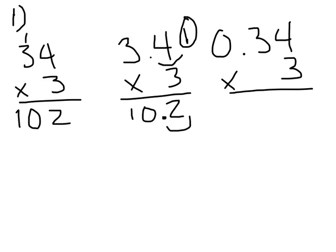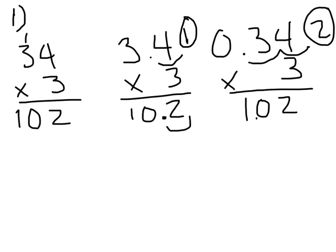Now let's do another example: 34 hundredths times 3. How many numbers would be behind the decimal in my product this time? There would be 1, 2 numbers behind the decimal. 34 times 3 is still 102. Where would I place my decimal to answer this problem correctly? I would place it behind the 1 so that 2 numbers are behind the decimal. 34 hundredths times 3 is 1 and 2 hundredths.